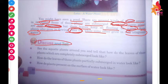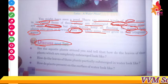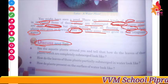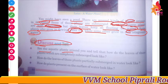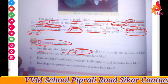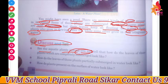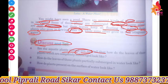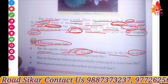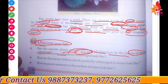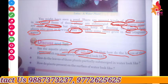Discuss and tell — we will discuss these questions. Our first question is: see the aquatic plants around you. What aquatic plants do you see around you? Tell that. And how do the leaves of those plants which are commonly submerged look like?